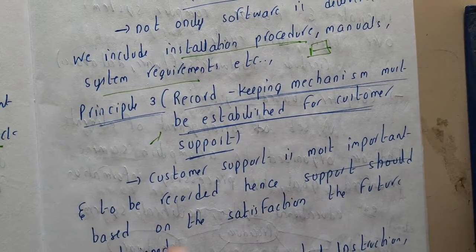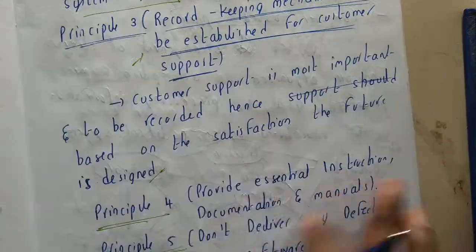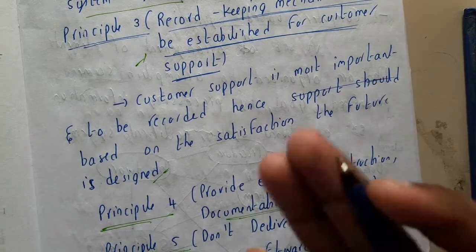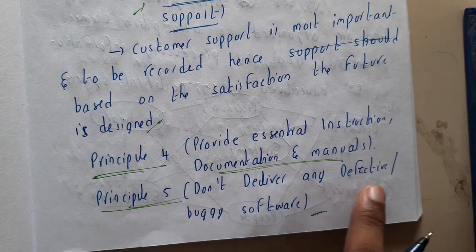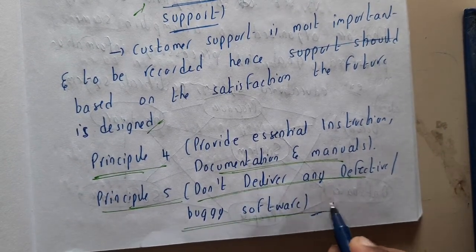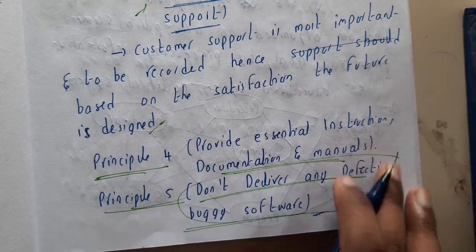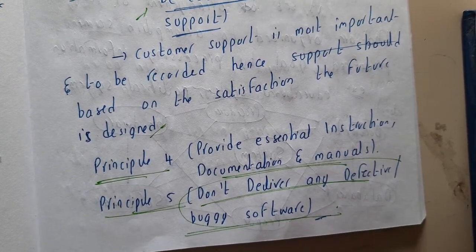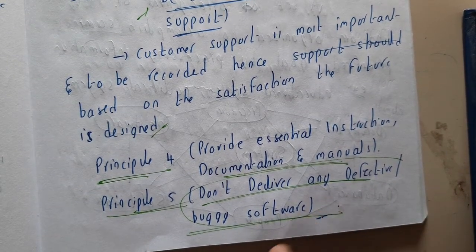Principle four is: provide essential instructions, documentation, and manuals. Principle five is: do not deliver any defective or buggy software. Delivering buggy software will reduce the reputation of your whole company. You should always make sure that the product is working 100% perfectly in all environments before you deploy it, or else ask for more time.